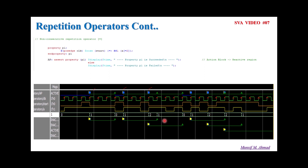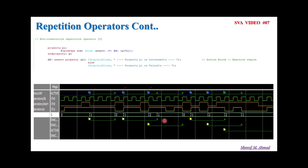So this is the concept of repetition operators. We discussed the consecutive repetition operator and non-consecutive repetition operator. In the next video, we'll try to explore the goto repetition operator and see one interesting question: what is the difference between the non-consecutive repetition operator and the goto repetition operator? I hope you have understood the concept and use case of repetition operators. Thanks for watching this video.